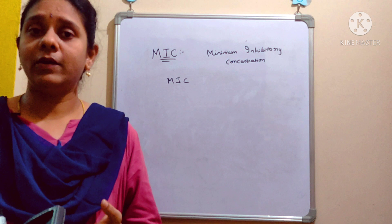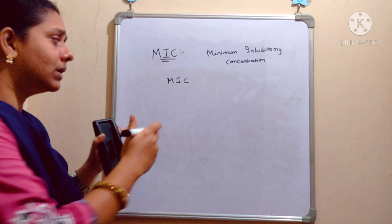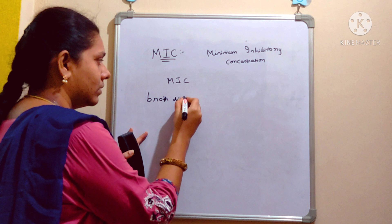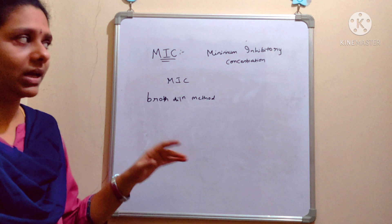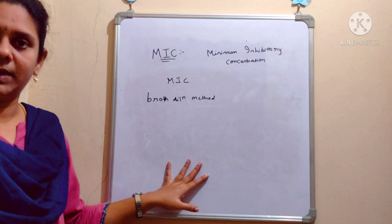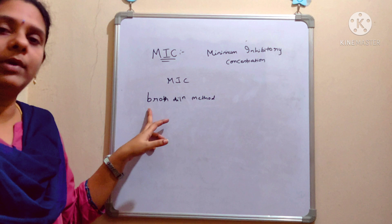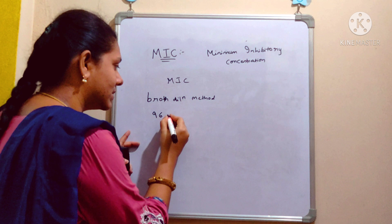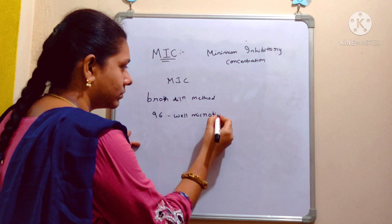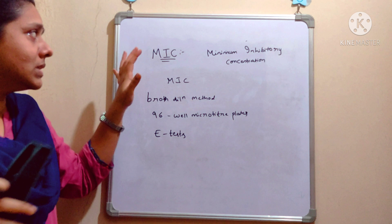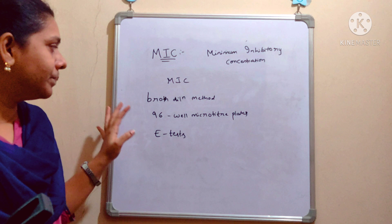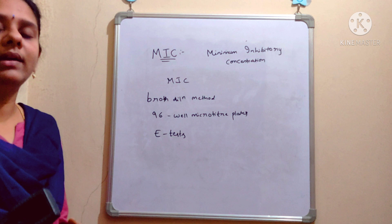Alexander Fleming discovered penicillin as an antimicrobial compound, and he performed experiments with the broth dilution method. Later it was standardized into the disc diffusion method by Kirby and Bauer, which we already discussed. MIC can also be performed with the broth dilution method, with 96-well micro-titer plates, and with the E-test.